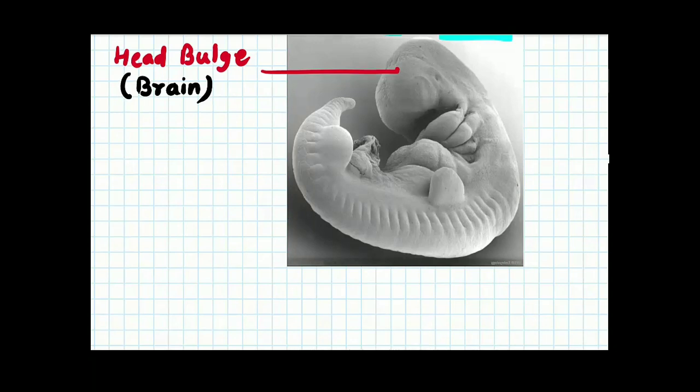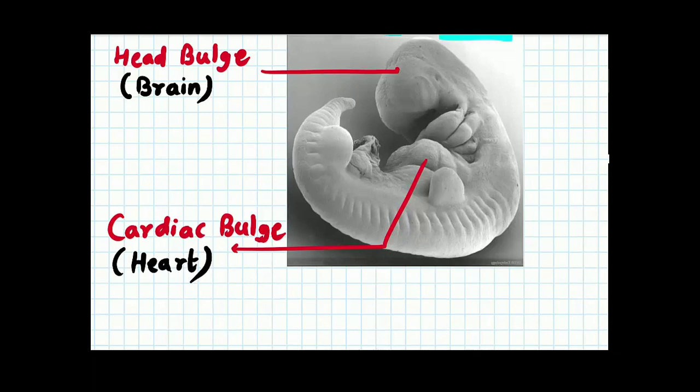And can you see here, there is one another elevation below the head bulge. This is known as cardiac bulge. Why it is known as the cardiac bulge? Because this part gives rise to the origin, to the heart. Inside this cardiac bulge there is the development of the heart. So from here you can solve the MCQ, image based MCQ for the various entrance exam. There will be image and you can indicate where is the development of the brain as well as where is the development of the heart.